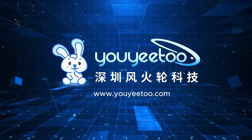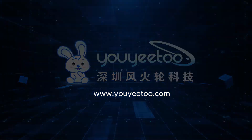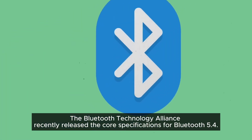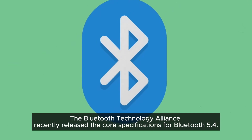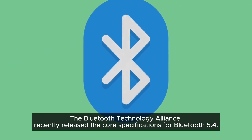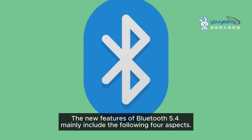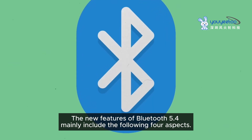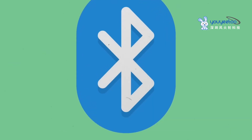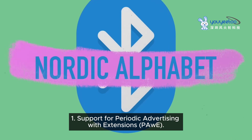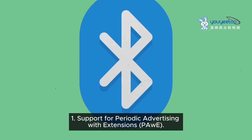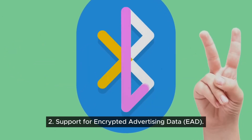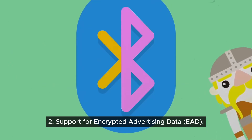Hello everyone. The Bluetooth Technology Alliance recently released the core specifications for Bluetooth 5.4. The new features of Bluetooth 5.4 mainly include the following four aspects: one, support for periodic advertising with responses (PAwR); two, support for encrypted advertising data; three, LE-AT security level specification; four, broadcaster encoding selection.